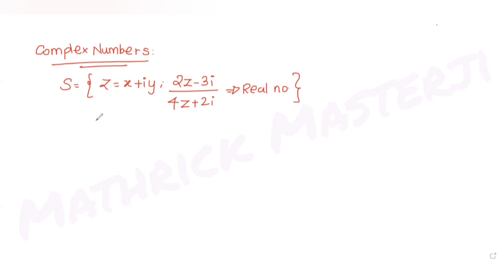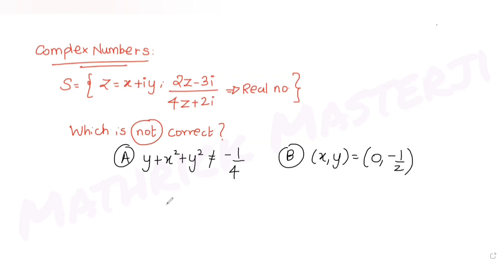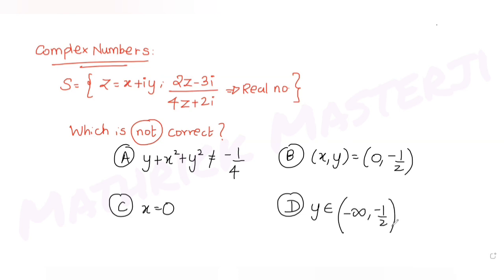The question asks which of the following is not correct. The answer choices are: (A) y plus x squared plus y squared is not equal to minus 1 over 4; (B) x comma y equals 0 comma minus half; (C) x equals 0; and (D) y belongs to minus infinity to minus half union minus half to infinity — meaning y is not equal to minus half.